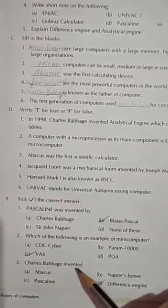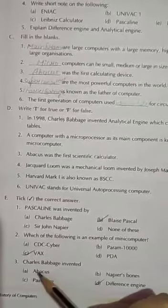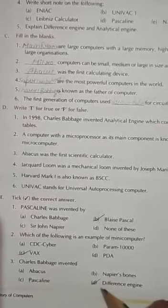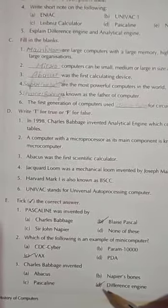Charles Babbage invented. Charles Babbage ne konsa device invent kiya tha? Abacus, Napier's bone, Pascaline or Difference engine. Answer is Difference engine.